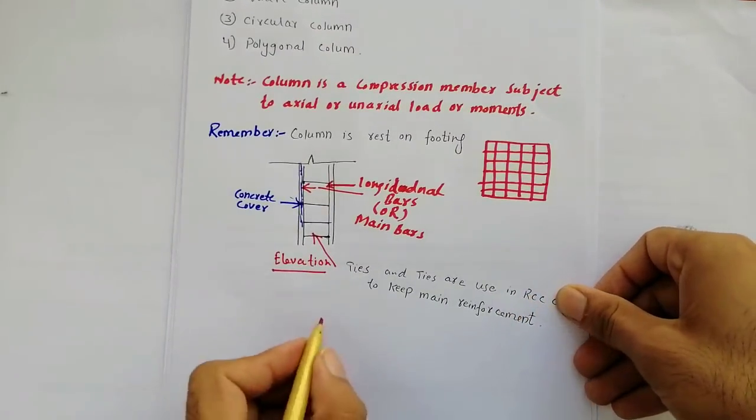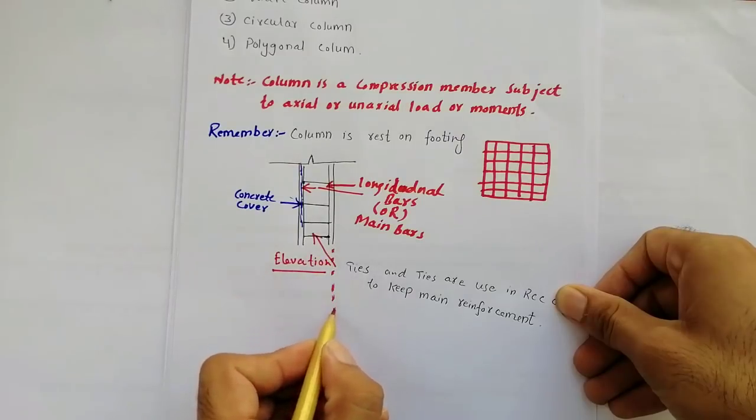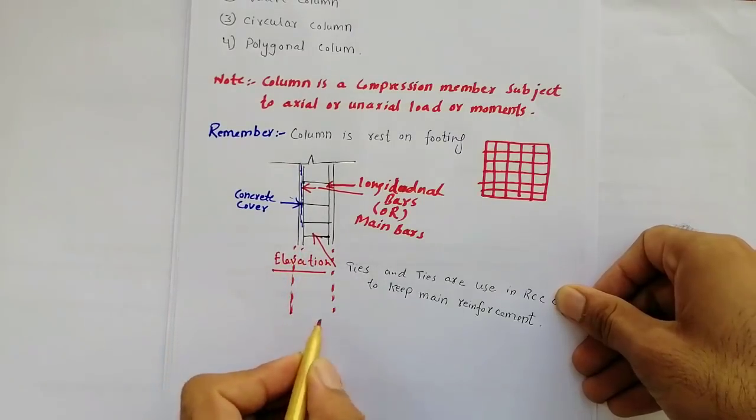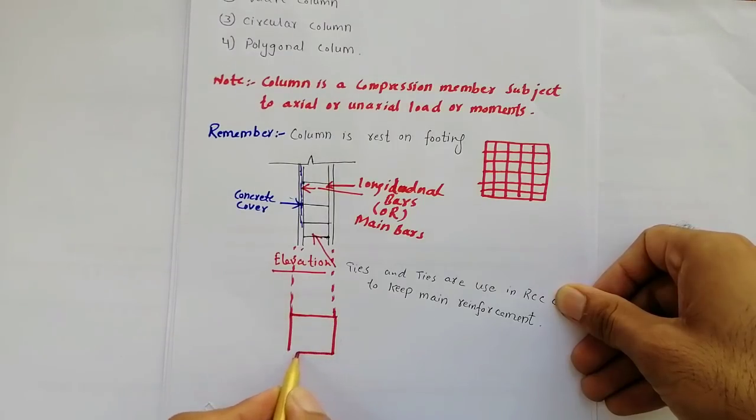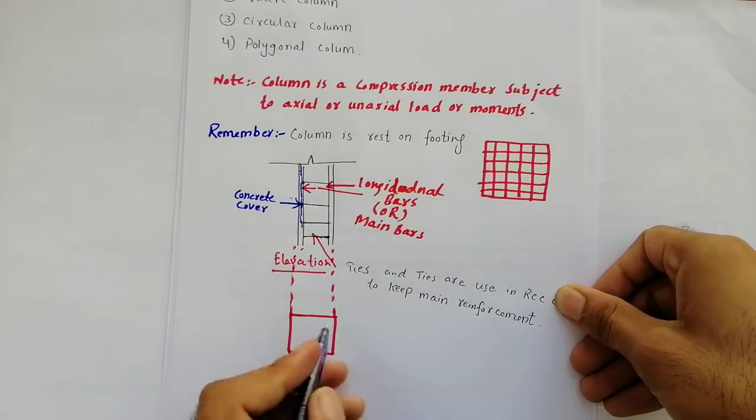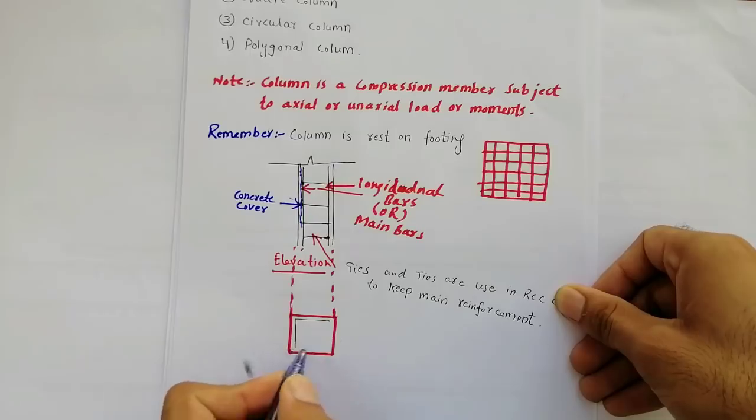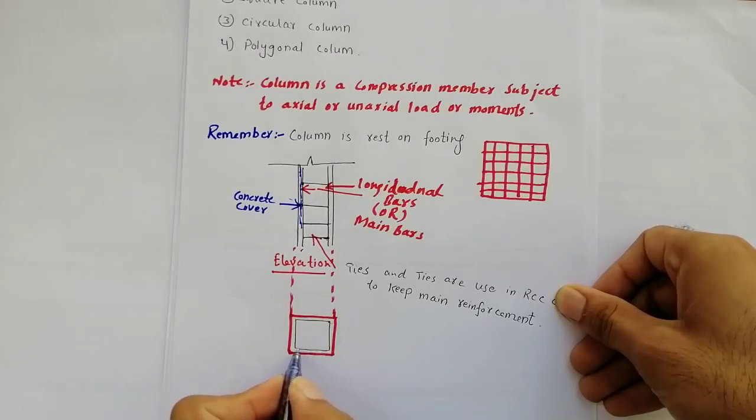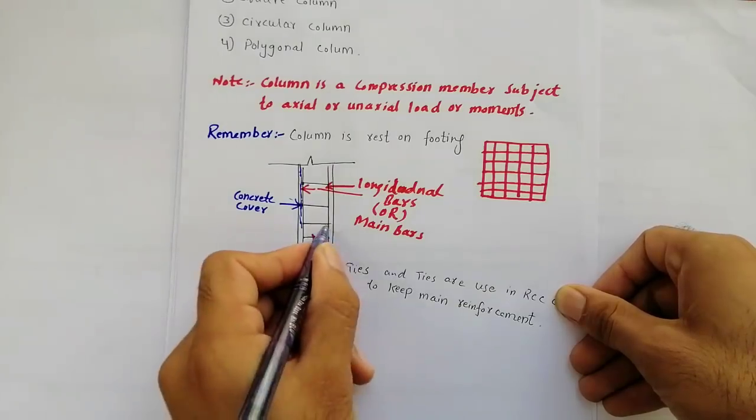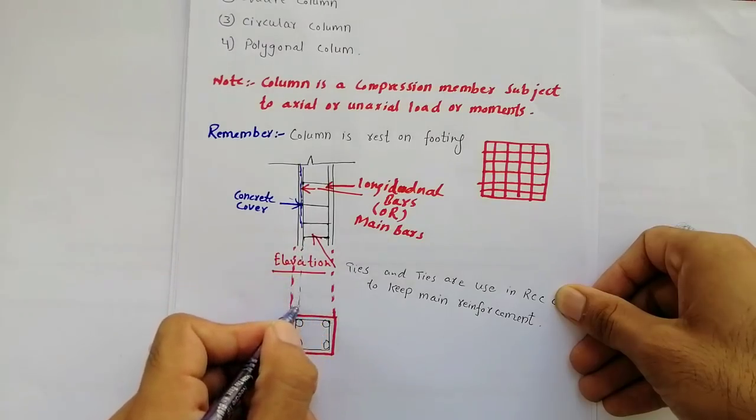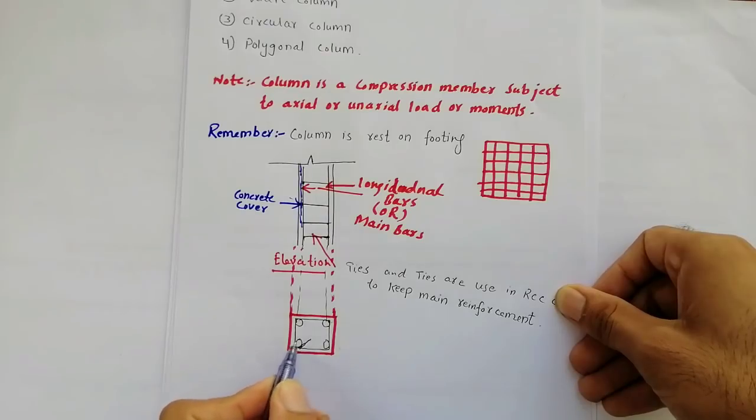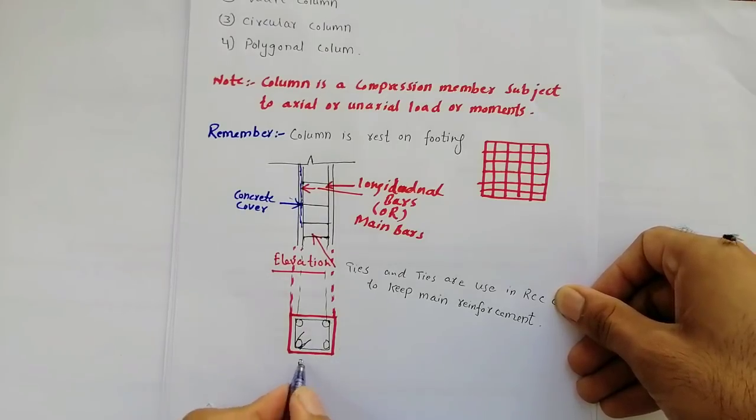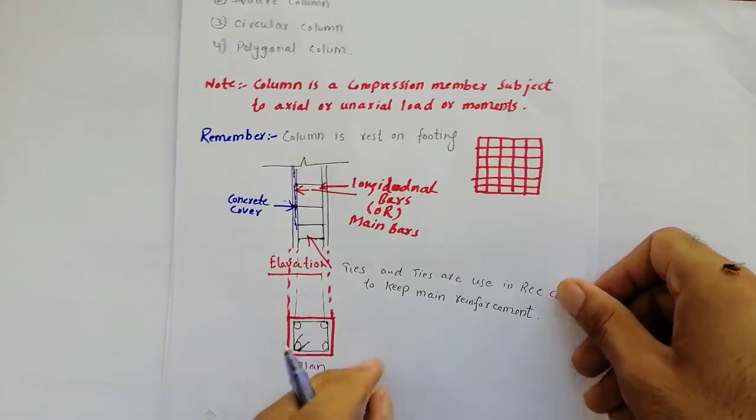It will come like this. Again, these are main reinforcement bars. And these are hooks. So this is plan. Remember, I have already discussed here that column is a compression member subject to axial or uniaxial load.